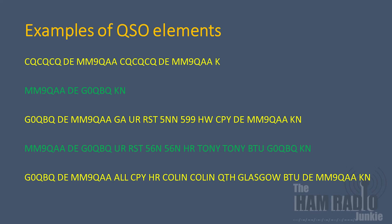The QSO then starts — they put in 'good afternoon', your signal is 5-9-9, followed by 'how copy', and then the station's call sign followed by K-N. The green station returns by stating that the RST or signal is 5-6-9, replacing the 9 with an N, giving their name as Tony, then 'back to you' with the other station's call sign followed by K-N once more.